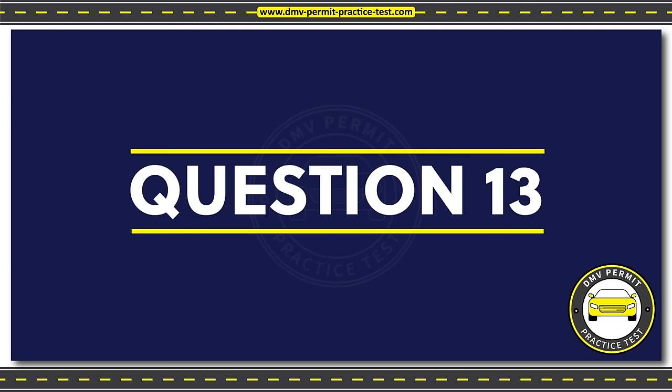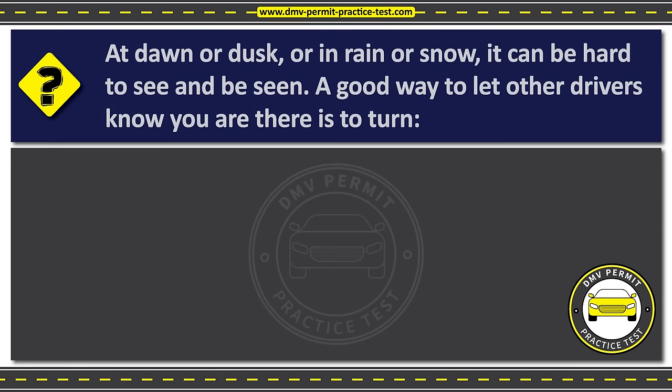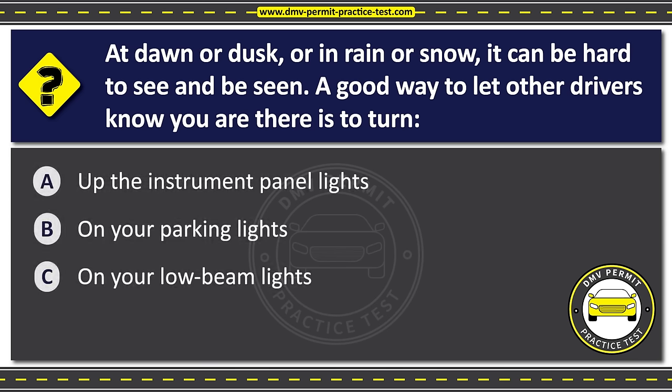Question thirteen. At dawn or dusk, or in rain or snow, it can be hard to see and be seen. A good way to let other drivers know you are there is to turn. Option A: Up the instrument panel lights. Option B: On your parking lights. Option C: On your low beam lights. The correct answer is Option C: On your low beam lights.